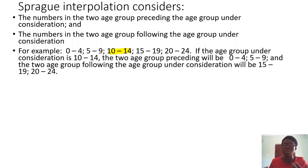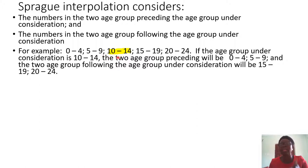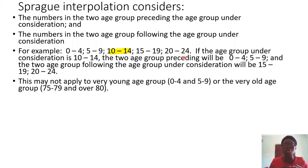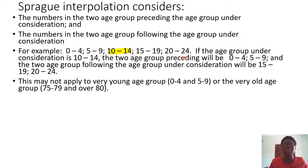Now there are other things to consider. If you look at 0 to 4 and 5 to 9, there are two groups coming before 10 to 14 — those are the preceding groups. When you want to work with the Sprague multiplier, you consider those two preceding groups, and at the same time you consider the two following groups: 15 to 19 and 20 to 24. You must consider all of these when determining a single age group.